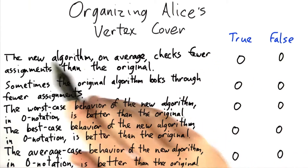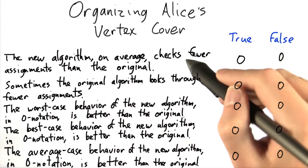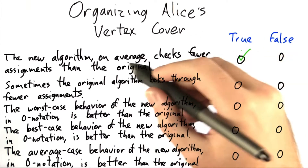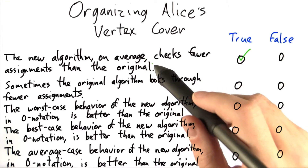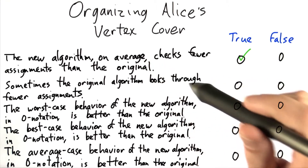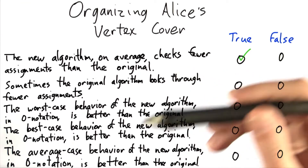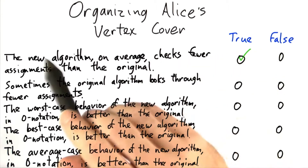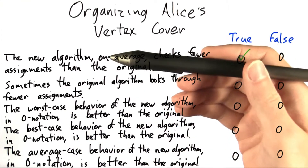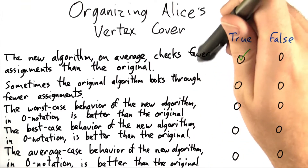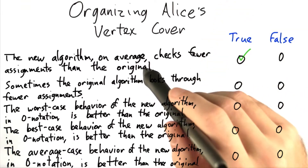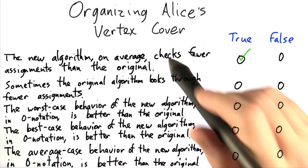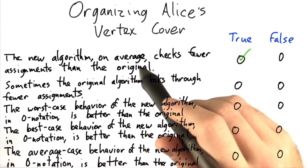Let's look at these questions. Does the new algorithm on average check fewer assignments than the original? This is actually true. To see this, you really just have to look at the fact that the original has to check every possible assignment — if it doesn't, it can't know that it's actually the lowest assignment. Whereas the new algorithm, as soon as it finds a vertex cover that works, since it starts from the bottom, it knows that that is the minimum vertex cover. So on average, the new algorithm will actually check fewer assignments than the original.